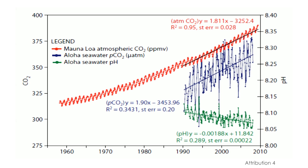Here is one data set confirming chemical changes in the ocean as a result of rising carbon dioxide. Carbon dioxide in the ocean, shown in blue, is rising, as carbon dioxide in the atmosphere, shown in red, is increasing. Ocean pH, shown in green, is steadily decreasing. This is what scientists predicted.